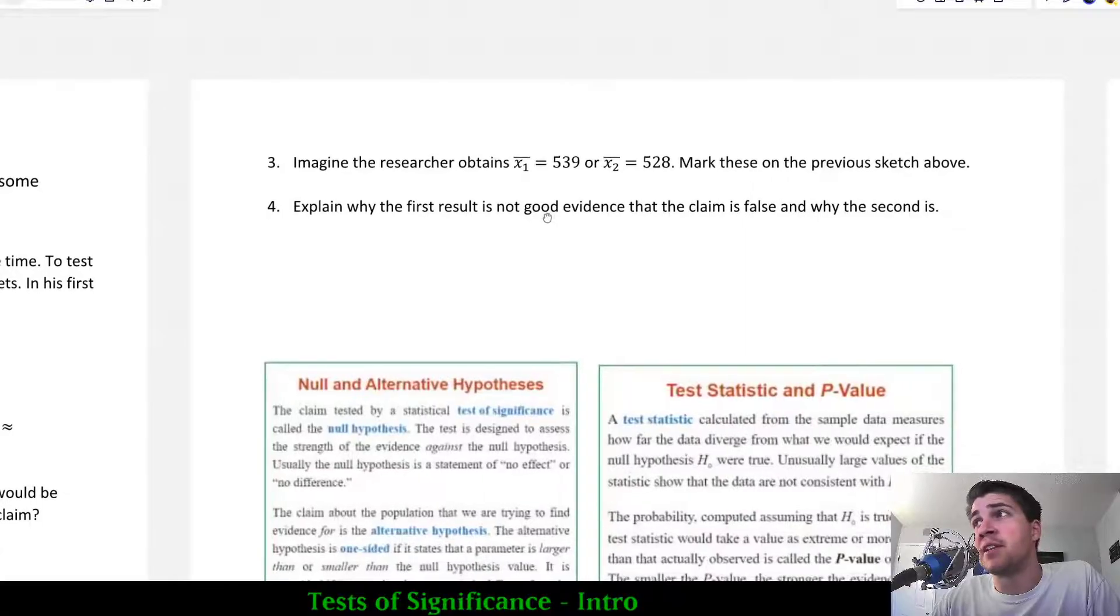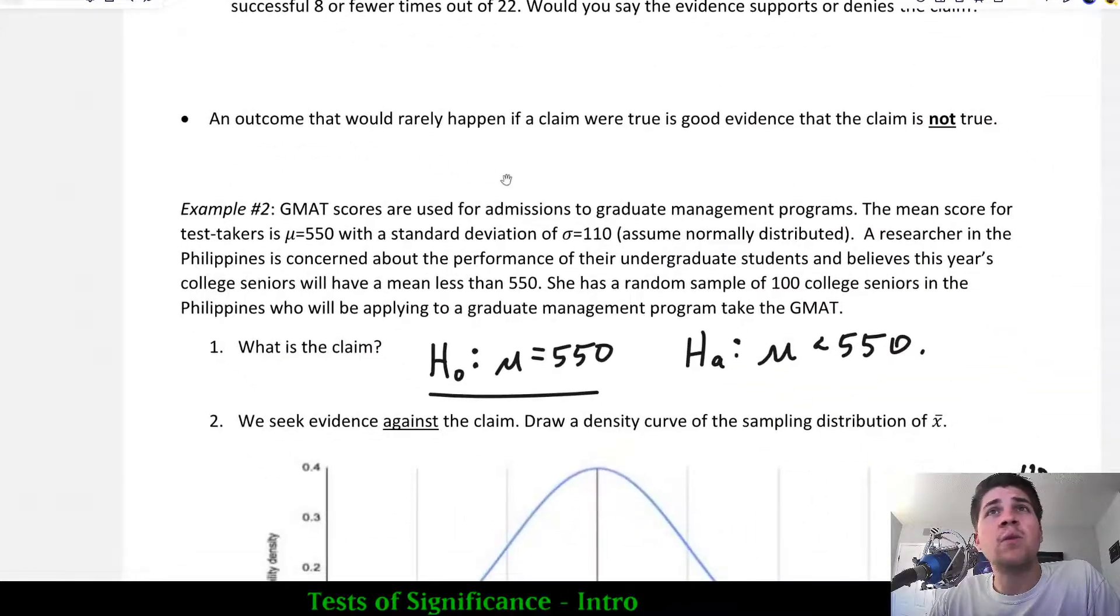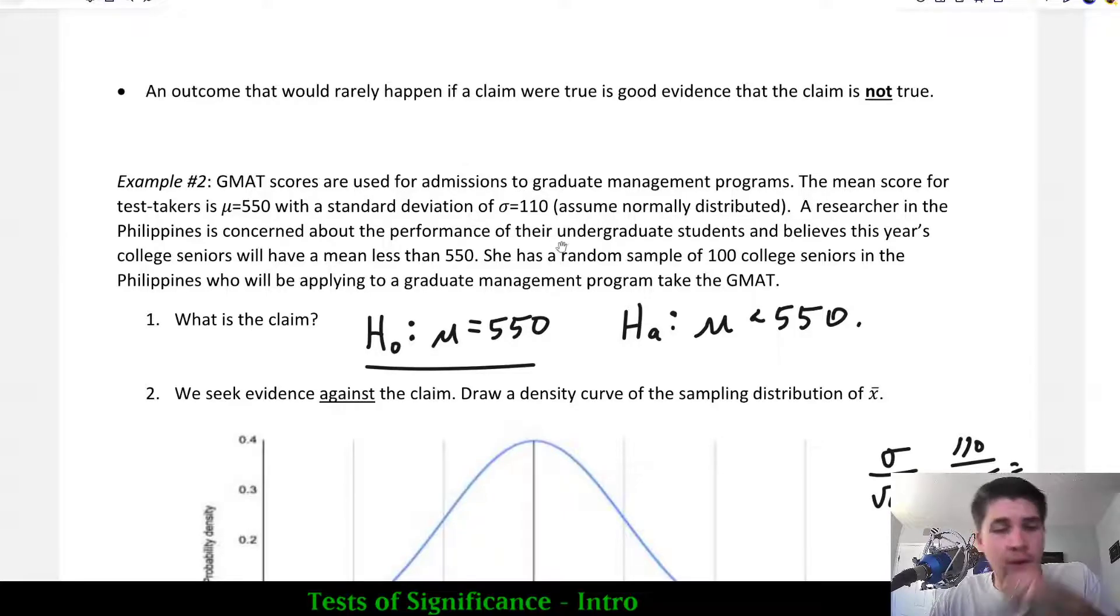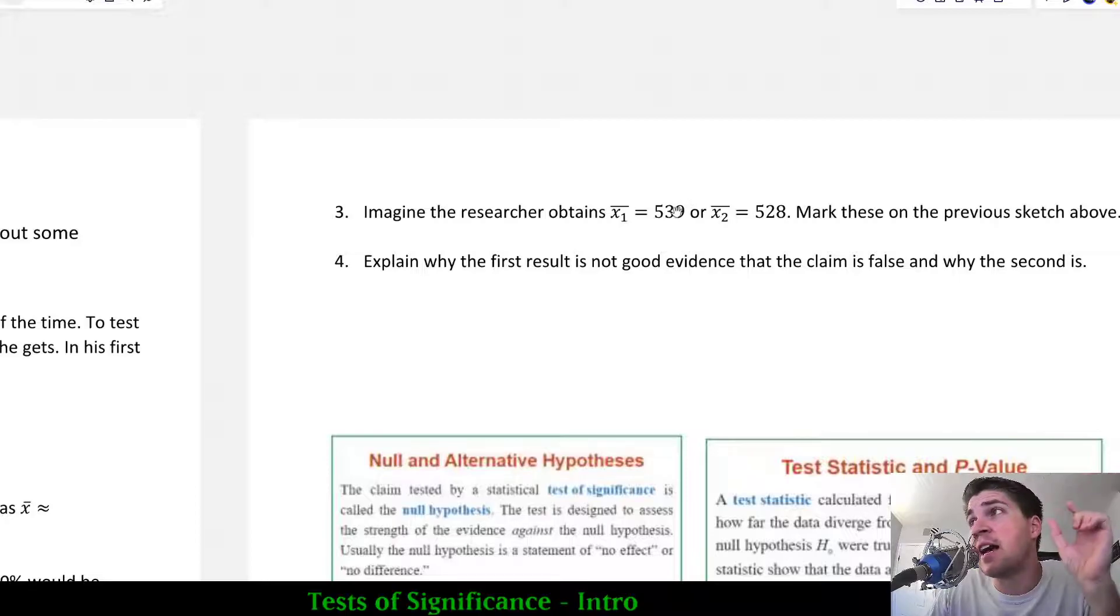If we look at the next couple examples on the next page of our lecture notes, it says imagine the researcher obtained a sample mean X-bar, X1-bar of 539 or X2-bar of 528. Mark these on the sketch and we'll determine the likelihood of them. In this assumption, the researcher was assuming that her students from the Philippines had an actual lower average than 550, that this was not correct, that it was somewhere below. And so in order to test to see if the average was less, she actually gathered data. Let's say she took two different samples and got the first sample of her students was 539, the second sample was 528.